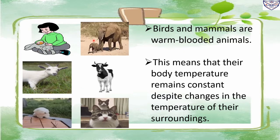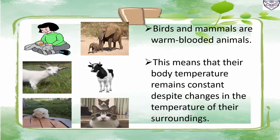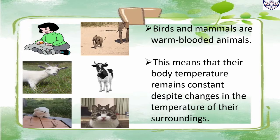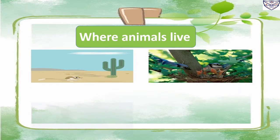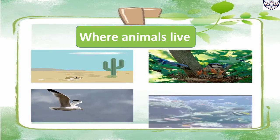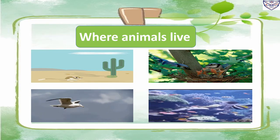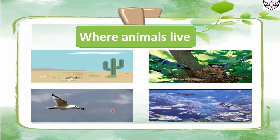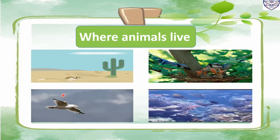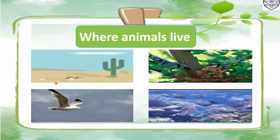Warm-blooded means their body temperature remains constant despite changes in the temperature of their surroundings. For example, human, elephant, goat, horse, cow, dog, and cat. Animals are found everywhere — on land, on trees, flying in the air, and in water. Based on where animals spend most of their time, they can be grouped into terrestrial, arboreal, aquatic, and amphibians.